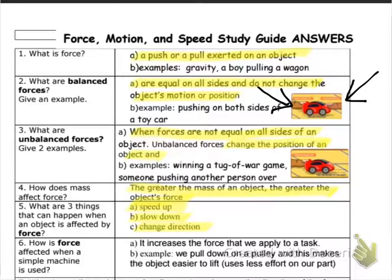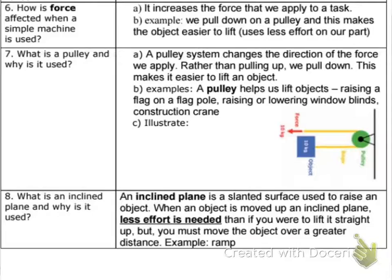Number six, how is force affected when a simple machine is used? Well, it says it affects the force we need to apply to the task. What does that mean? Well, we pull down on a pulley, it makes it easier to lift. So basically, when we use a simple machine, it causes us to use less effort on our part because the machine increases the effort given. Alright, remember pause this if you need to, if you haven't written this down. I'm going to move on.